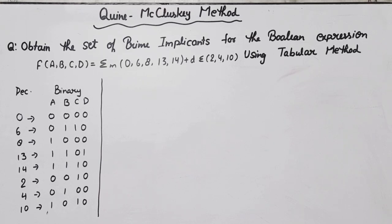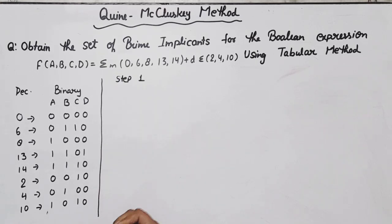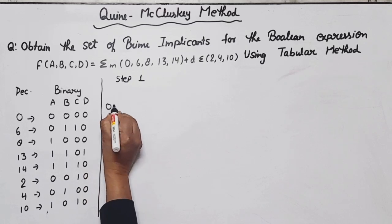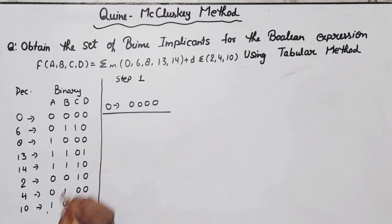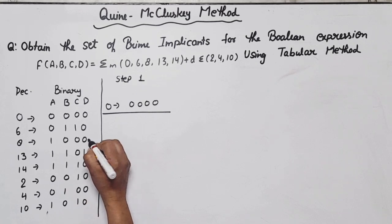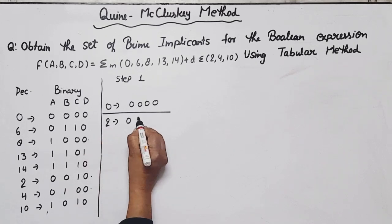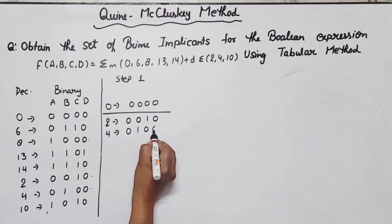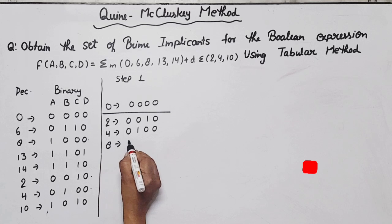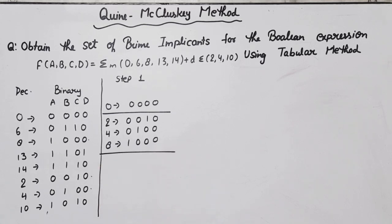What we have to do is group them. This is Step 1 — grouping on the basis of number of ones. If there is no one in 0, then the first single group will be just 0. Number of ones equal to 1: we have 8 (1000), 2 (0010), and 4 (0100). These are the minterms with a single one.